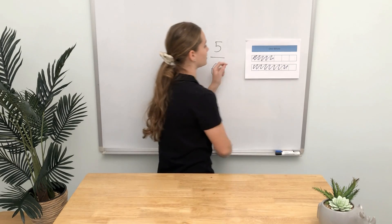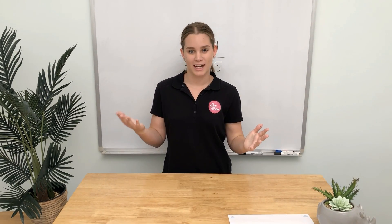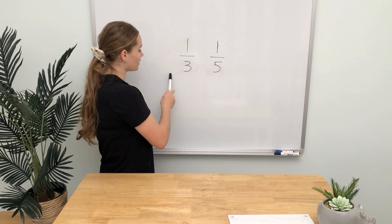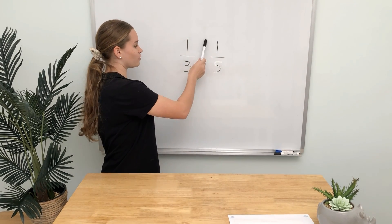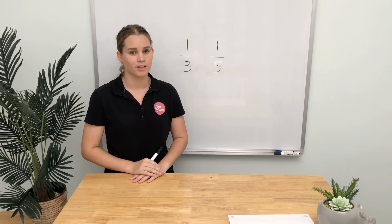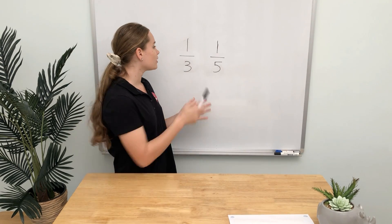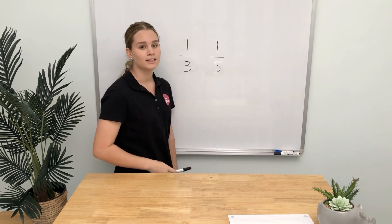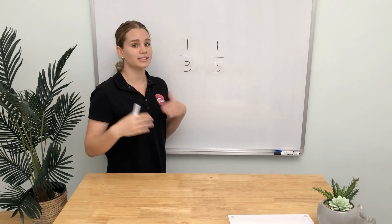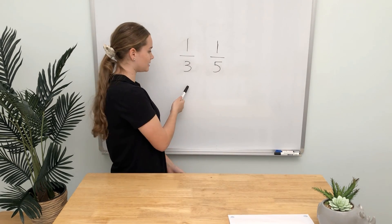Let's have a look at another one. Now we have two more fractions: one-third and one-fifth. How do we compare these fractions? Well, we know they have the same numerators, but the denominators are different, so we have to compare them using their denominators.